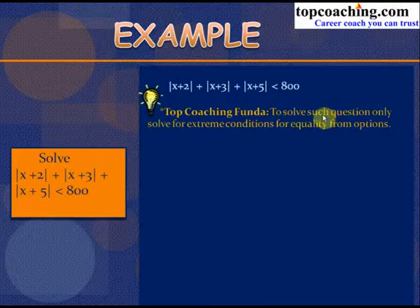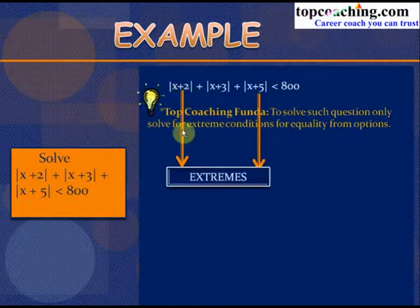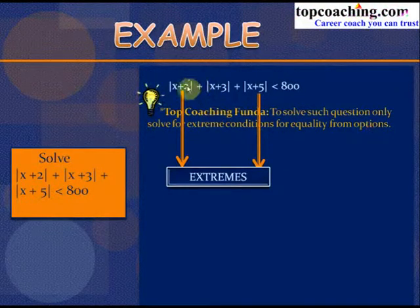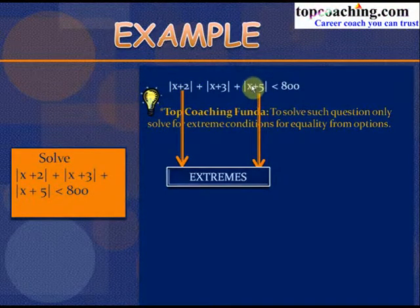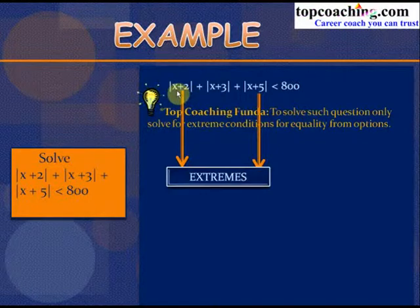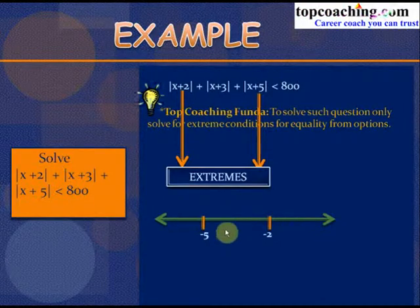The approach is to solve only for the extreme conditions. The extreme points are x = −2 and x = −5, which we represent on the number line. When x < −5, all three quantities x + 2, x + 3, and x + 5 are negative.